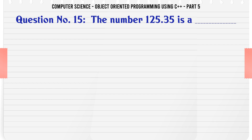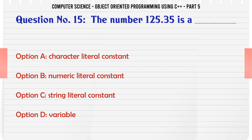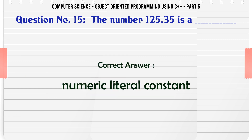The number 125.35 is. A. A character literal constant. B. A numeric literal constant. C. A string literal constant. D. A variable. The correct answer is: Numeric literal constant.